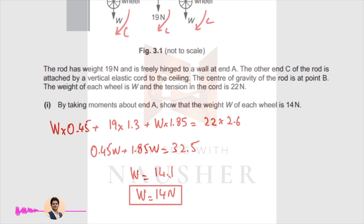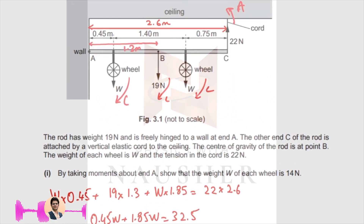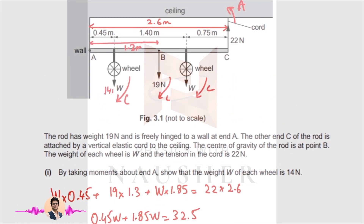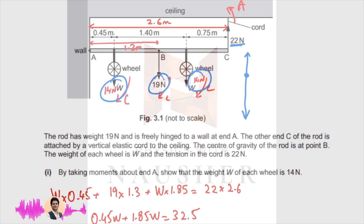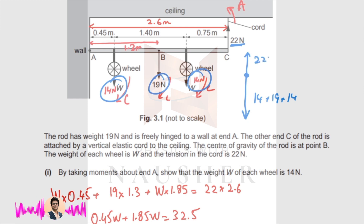Next, determine the magnitude and direction of the force acting on the rod at point A. Since W is 14 Newtons, we have 14 and 14 for the two wheels. When you add the three downward forces — 14, 19, and 14 — they do not equal 22. The total downward force and total upward force must be equal, but 14 plus 19 plus 14 does not equal 22, so there must be another upward force to balance.